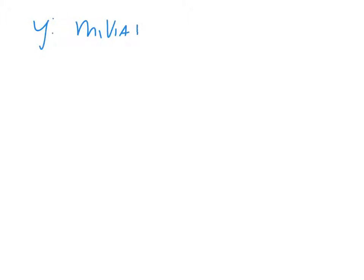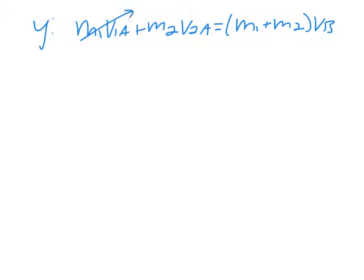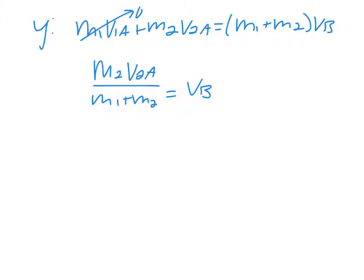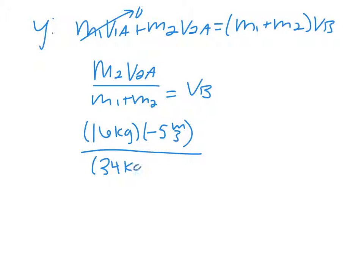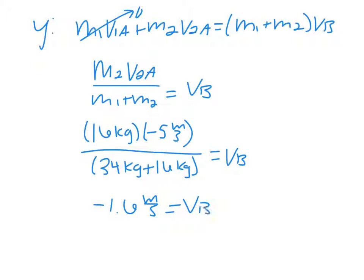Moving to the y direction — still inelastic: M1·V1A + M2·V2A = (M1 + M2)·VB. In y, object 1 (child) has no initial y motion, so: VB = M2·V2A / (M1 + M2) = (16 × −5) / (34 + 16) = −1.6 meters per second in y. Negative because the canoe is moving down.